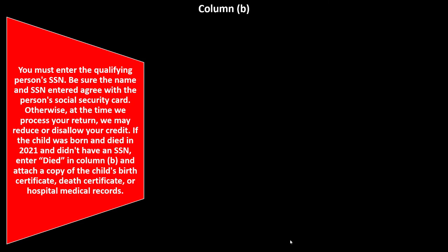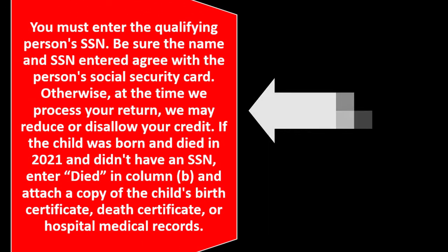Column B: you must enter the qualifying person's SSN. You'll typically have that because they're often a dependent. Be sure the name and SSN agree with the person's social security card — otherwise, at the time your return is processed, we may reduce or disallow your credit.